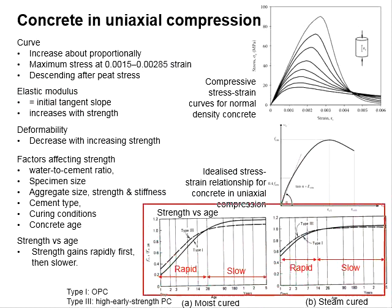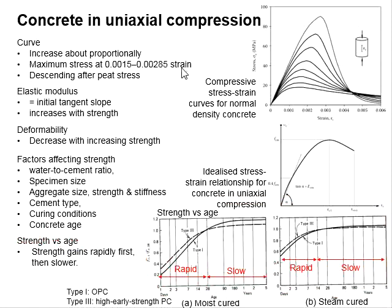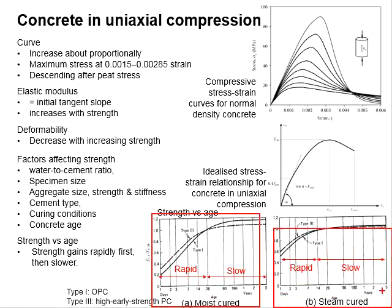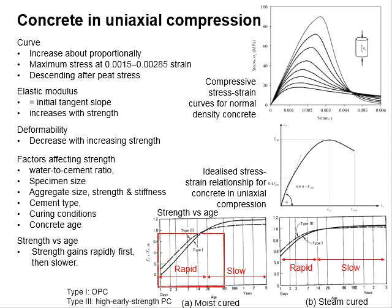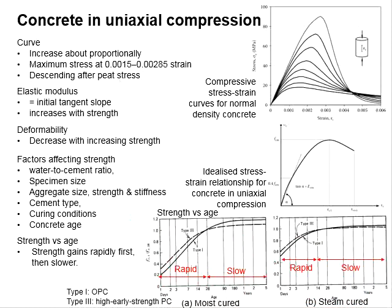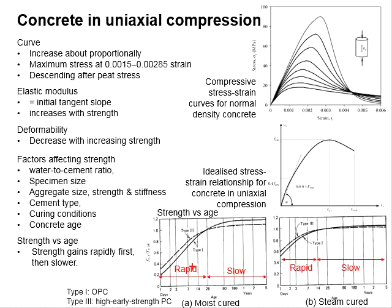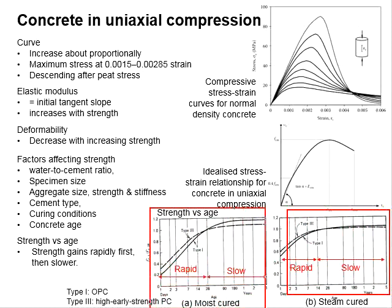This diagram shows the relationship of compressive strength versus the age of the concrete. There are two types of curing mechanism: moist curing and steam curing. There are also two types of cement used — Type 1, which is OPC, and Type 3, which is high early strength cement.